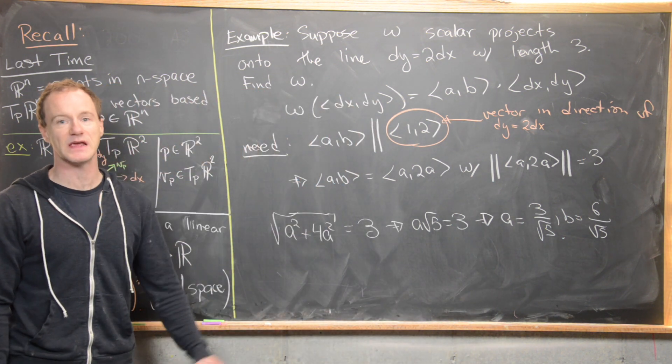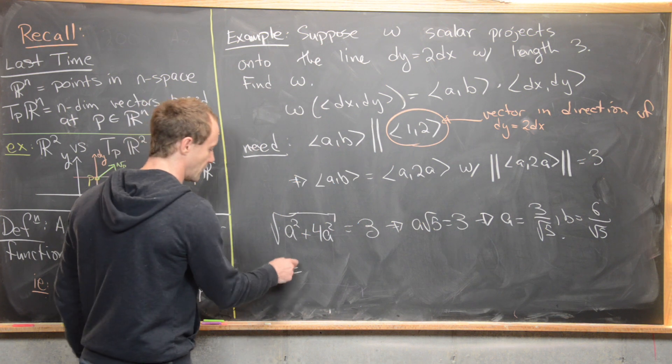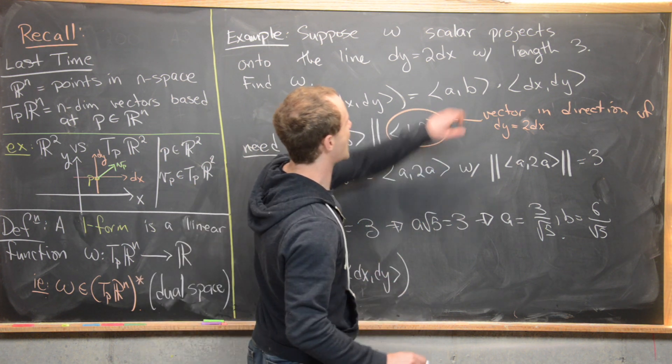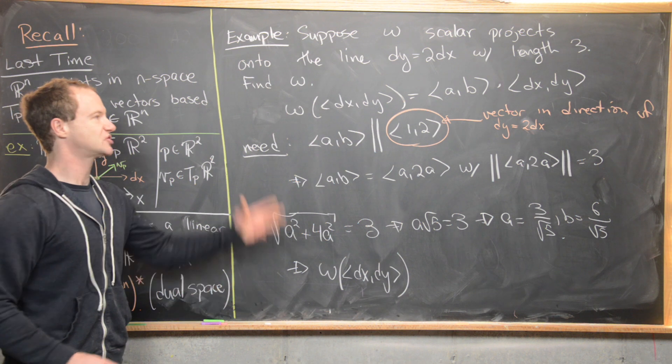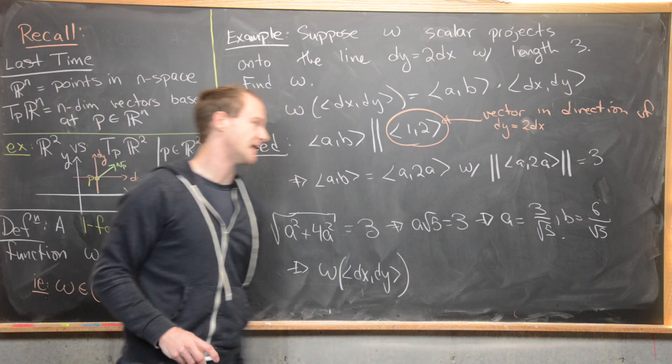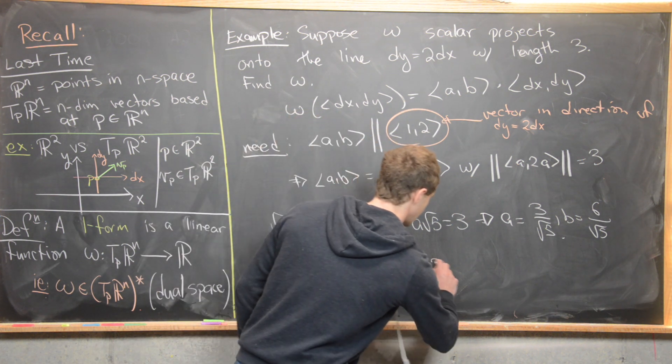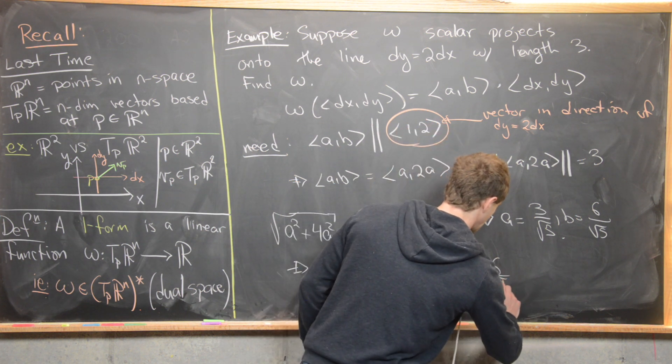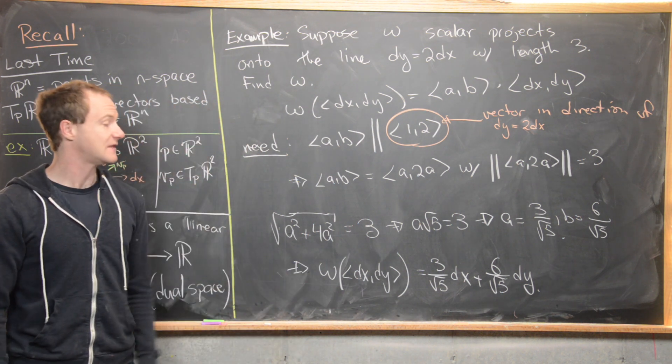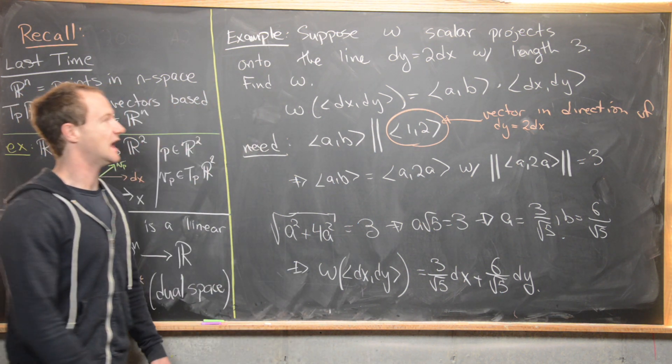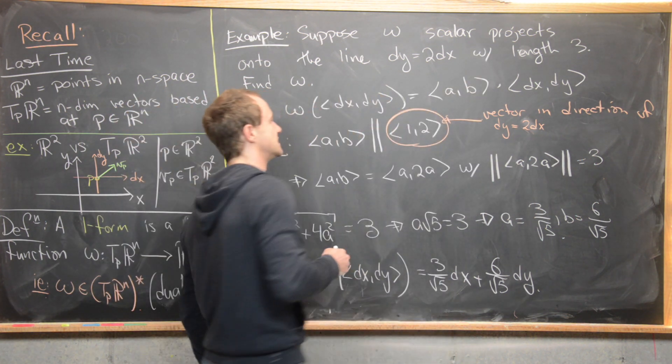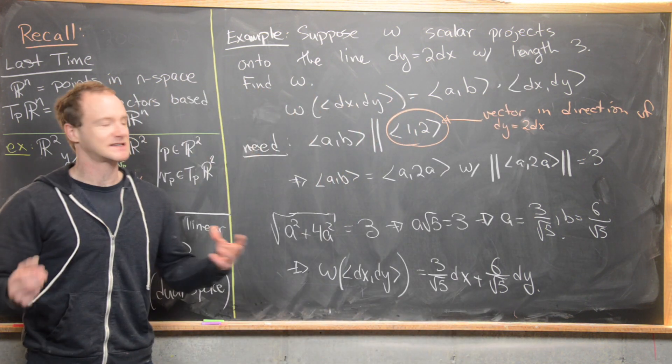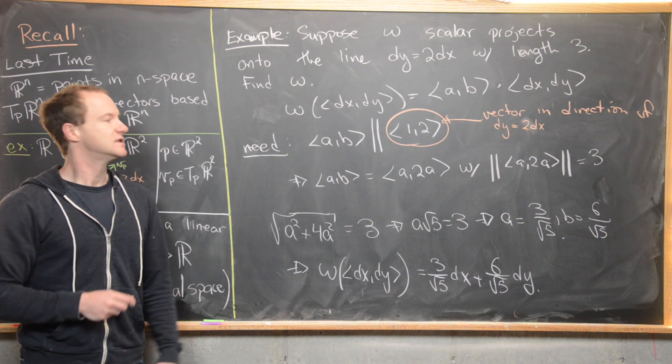And so we found a and b, but those completely determine our one-form. And now that means that we can write omega in the following way: omega(dx, dy), instead of writing as (a, b) dot (dx, dy), I'll just write it as a·dx + b·dy using those values of a and b. So here I'm going to have (3/√5)·dx + (6/√5)·dy. And this would be this one-form that satisfies these conditions. In other words, it's the scalar projection onto this line dy = 2dx, and it multiplies that scalar projection by a length of 3. So that's a good place to stop.